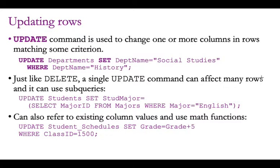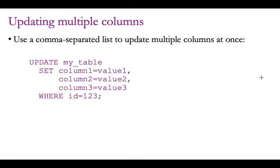In the SET part of UPDATE, we can refer to column values. For example: UPDATE student_schedules SET grade = grade + 5 WHERE class_id = 1500 — this would look at all enrollments for that class and change the grade to be five greater than what it was before, adding five points to all grades. The exact value would be different for each row depending on the old value. We can also update multiple values at the same time by putting commas between them: SET column1 = value1, column2 = value2, column3 = value3.